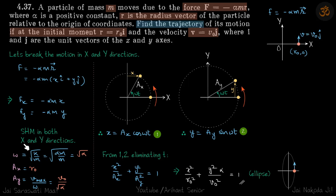Let's find omega and amplitudes. Omega we know is root k by m, and you can see k is same, so k is alpha m in both cases. So omega becomes root alpha m by m, that is root alpha. So in both x and y directions, omega is constant.